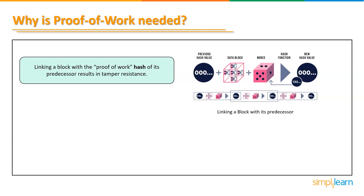This linking results in tamper resistance because the hash of each block is an ingredient in the hash of the following block. Any changes in the chain will affect the final proof of work hash as well as all block hashes in between, so the deeper the altered block, the more computational effort needed for tampering.